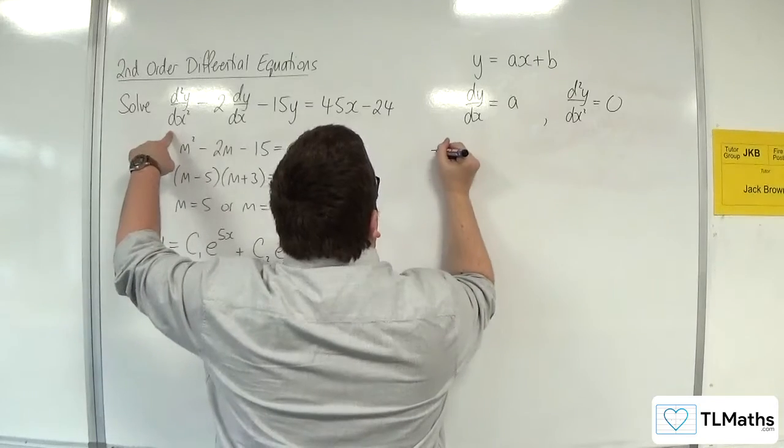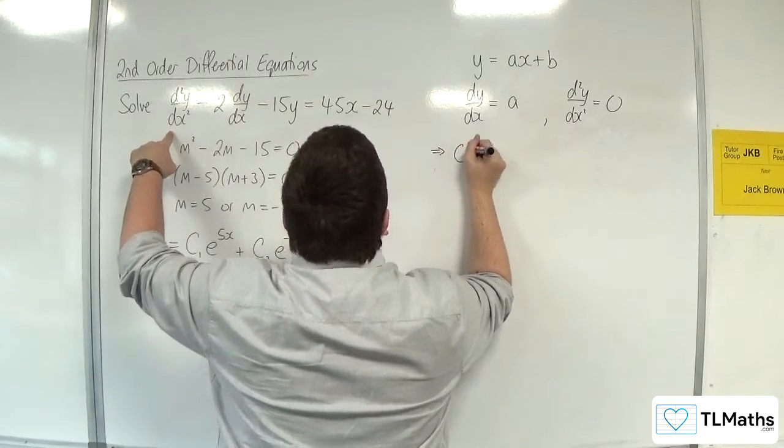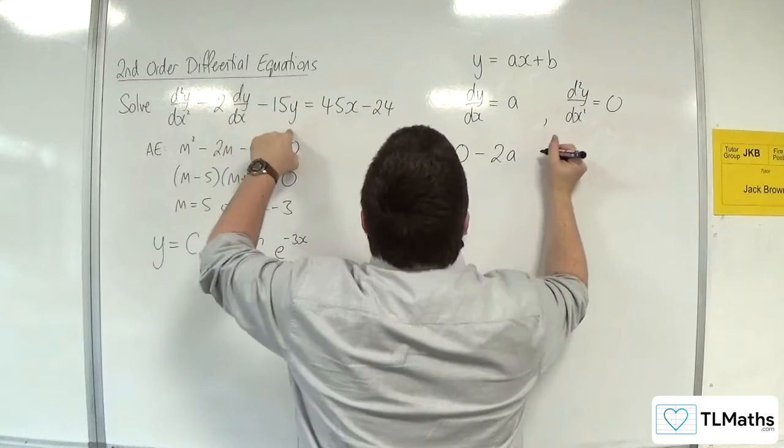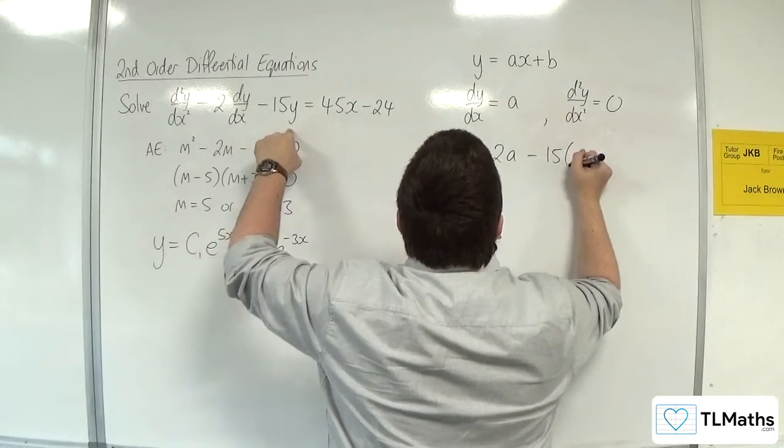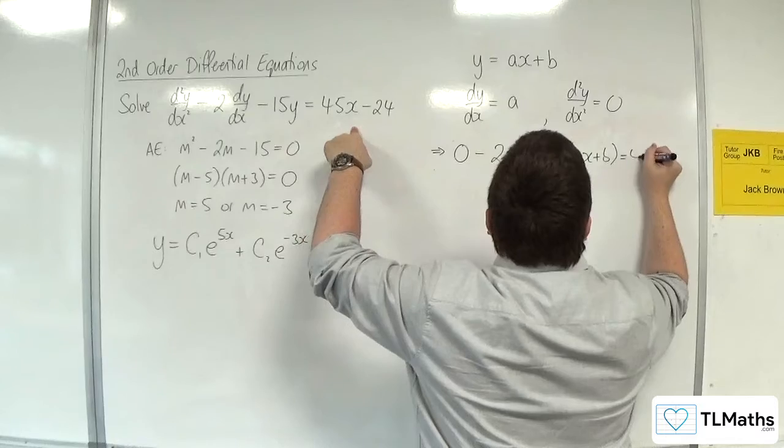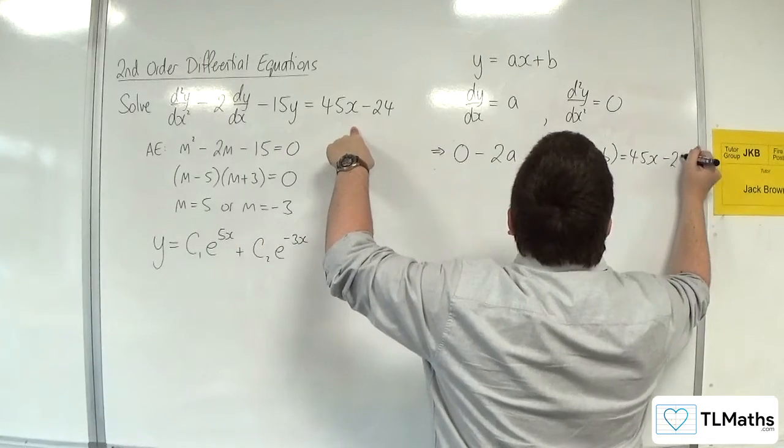So if I substitute in, we're going to get 0 - 2 lots of a - 15 lots of y = 45x - 24.